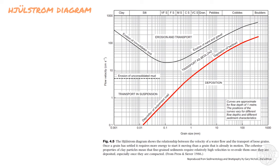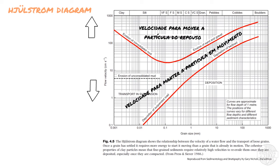Now the upper line shows the velocity needed to move a particle from rest. Note that at any given grain size, the velocity to keep the particle moving is lower than the velocity needed to initiate the movement.